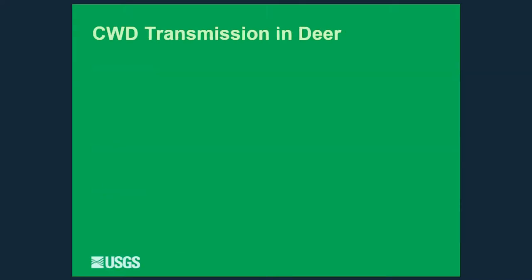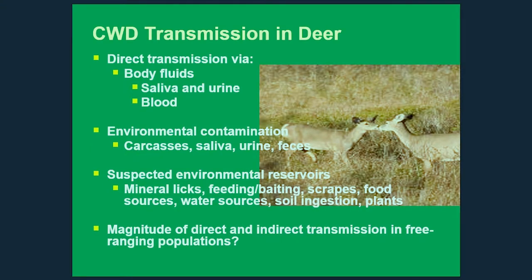Deer are very social creatures — they contact and groom each other, so disease can easily be passed by saliva. It can also be passed by urine, particularly during the breeding season. The second major route of transmission is through the environment. Carcasses that die from CWD are highly infectious, and saliva, urine, and feces are all deposited in the environment, leading to infection through indirect routes.